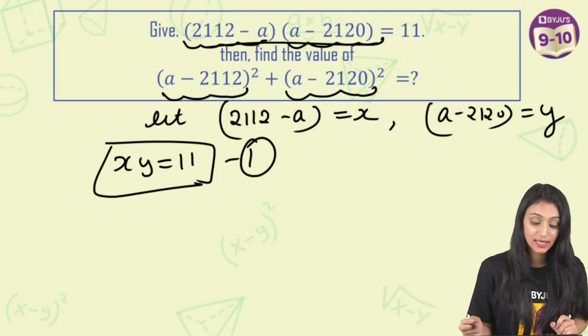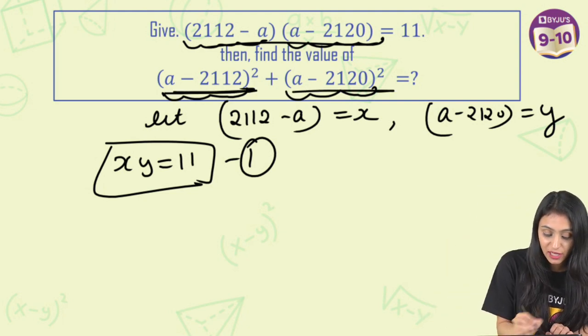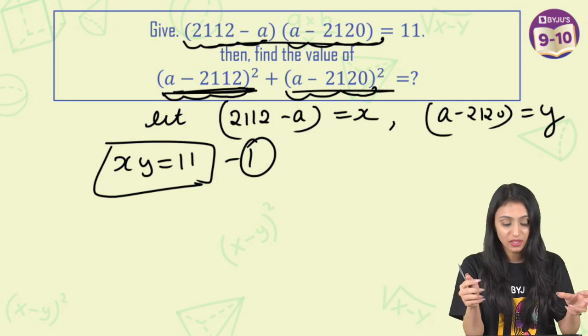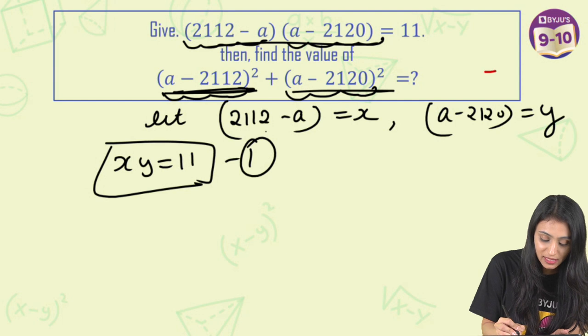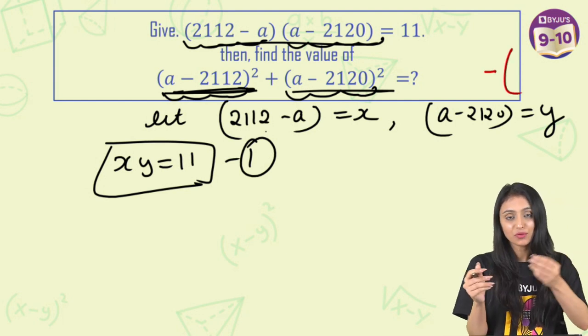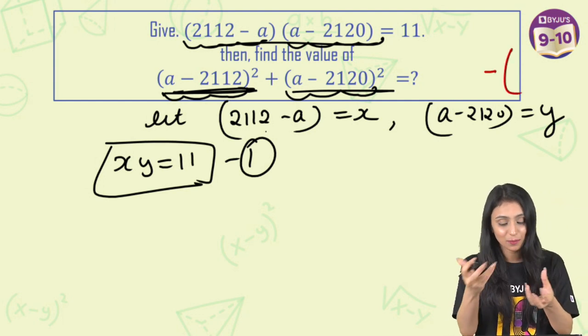Now what is the question asking? The question is asking us to find out the value of this. So this is nothing, it is just opposite of this. If I take minus sign common from here, what is this going to be? If you take minus sign common, the signs inside the bracket change.